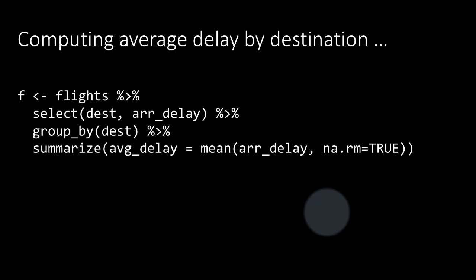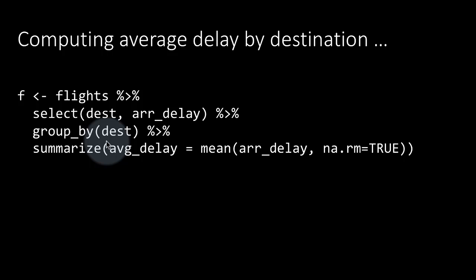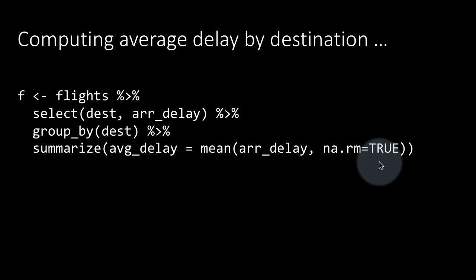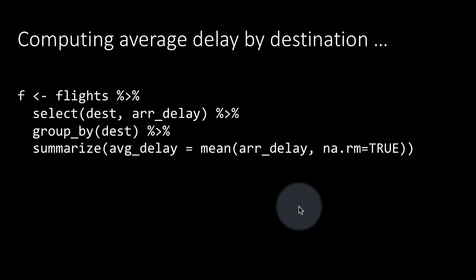Let's take a look at a few more examples of using joins for some meaningful computations. Let's say we want to compute the average delay by destination. We do flights, select destination and arrival delay, then group by destination and summarize: average delay equals mean arrival delay with na.rm equals true. So basically we select only destination and arrival delay, group by destination, and calculate the average arrival delay for each destination.